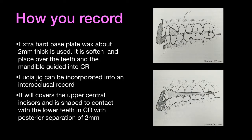To record centric relation, trim an extra-hard baseplate wax into an arch form, soften it in warm water, and place it against the maxillary arch with the anterior teeth approximately 6 mm inside the periphery of the wax. Carefully apply finger pressure around the periphery so that indentations of all maxillary cusp tips will be registered in the wax. Then guide the mandible into CR. A Lucia jig can be incorporated into the interocclusal record to deprogram the muscles; it covers the upper central incisors and is shaped to contact the lower teeth in CR with posterior separation of 2 mm.